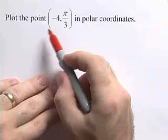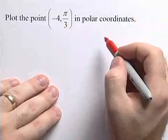Here again, we're asked to plot a point in polar coordinates. We'd like to plot the point negative 4, pi over 3, in polar coordinates.